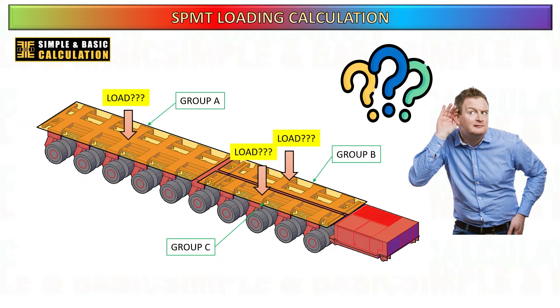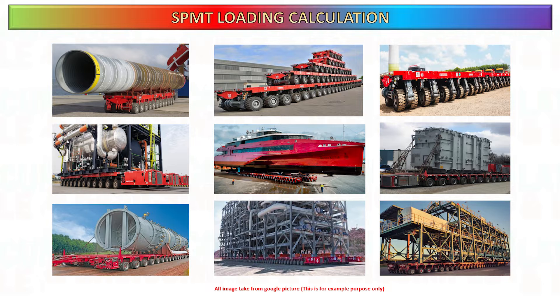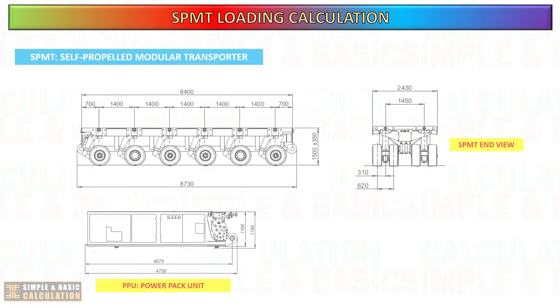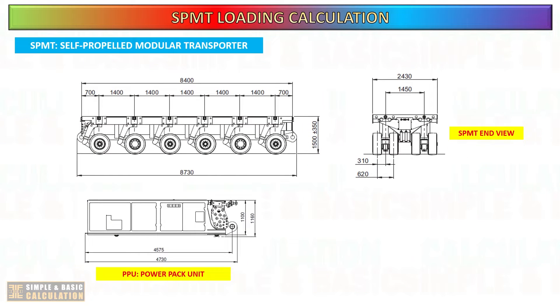SPMTs consist of modular units each equipped with its own set of axles. These modular units can be connected together to form a larger transporter capable of carrying extremely heavy loads. Each modular unit typically contains multiple axles which are grouped together in various configurations depending on the specific requirements of the load being transported.